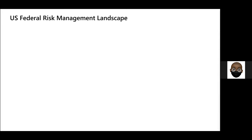So what does the US federal government landscape look like? We've been hearing of FISMA, NIST, CJIS, CMMC, and others. What we plan to do here is introduce all of these different kinds of risk management frameworks. We'll start with an overview.